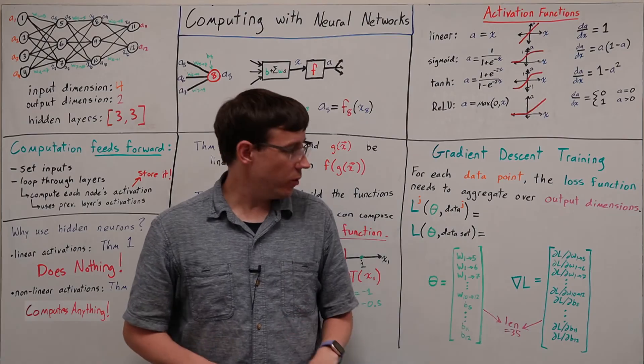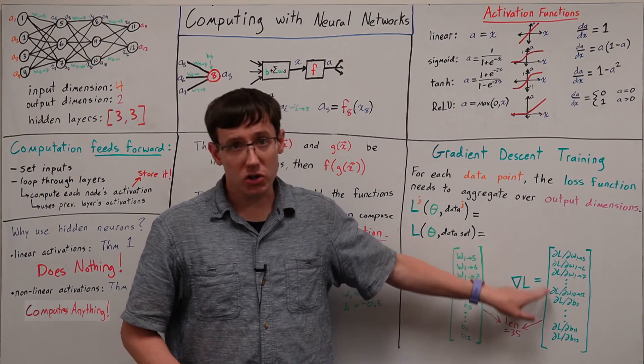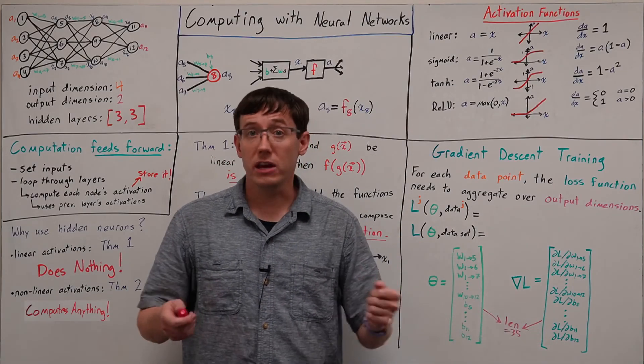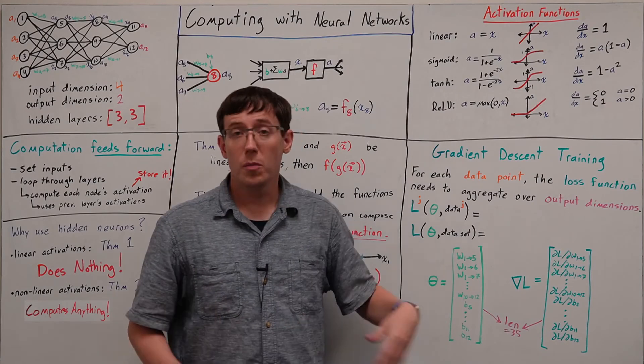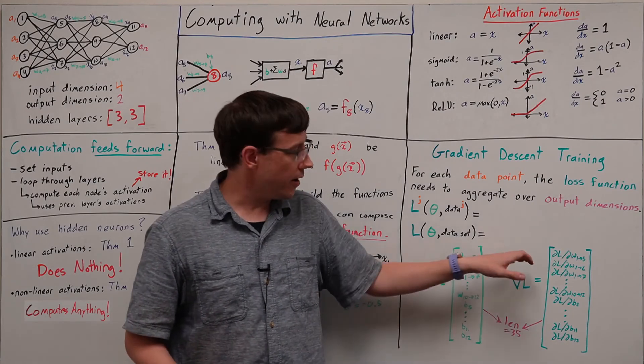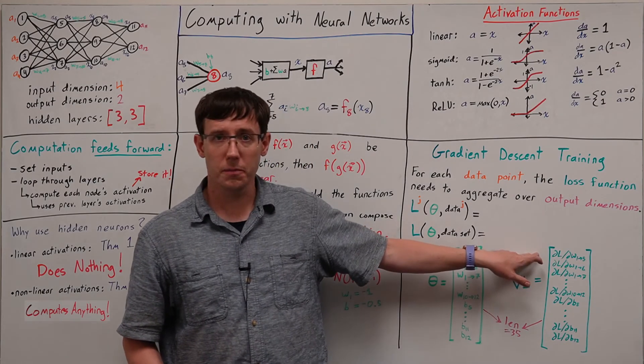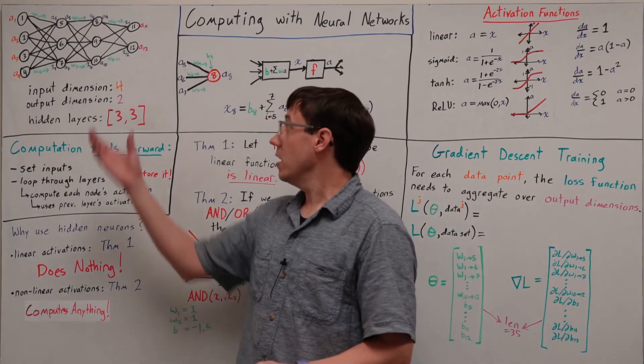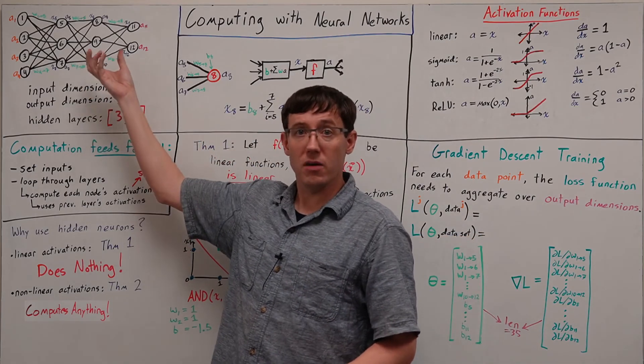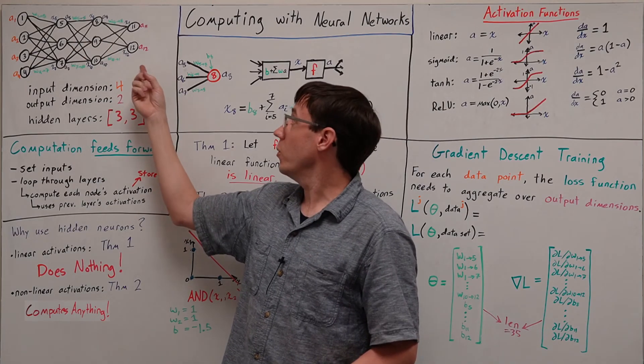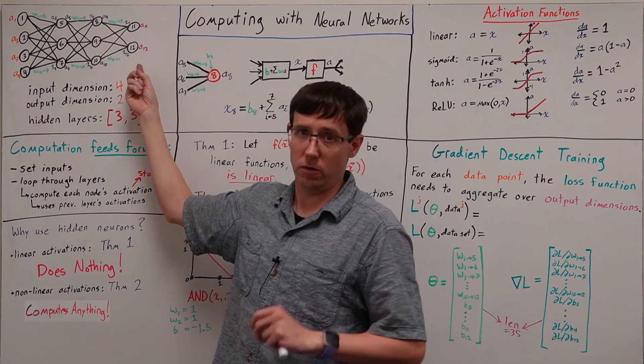And when we compute gradients, we will have a partial derivative for each of those parameters. But those partial derivatives are defined based on the loss function. And so we need to think about what is the loss function when we have a neural network with multiple output neurons.